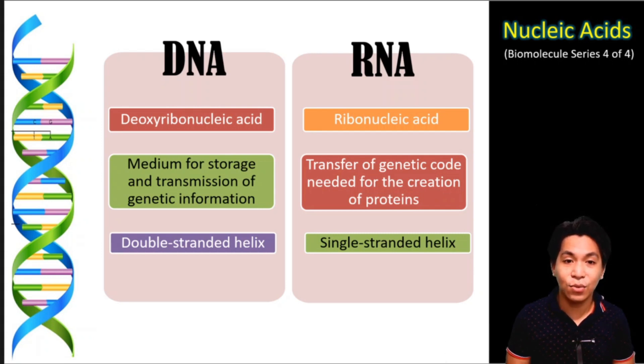DNA is used to store and transmit genetic information while RNA is used to transport genetic codes in creating proteins. Lastly, the structure of DNA is a double-stranded helix while RNA is a single-stranded helix.